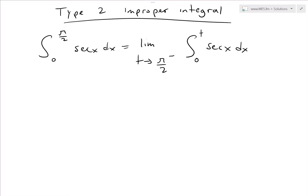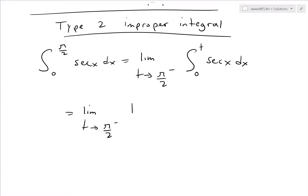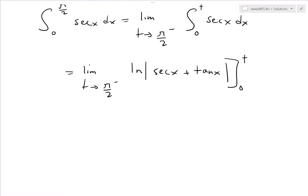When we evaluate this, it equals the limit as t approaches π/2 from the left side. Now the integral of secant of x — you can see the proof in my earlier video — is just equal to ln of the absolute value of secant x plus tan x. So we evaluate that from 0 to t.